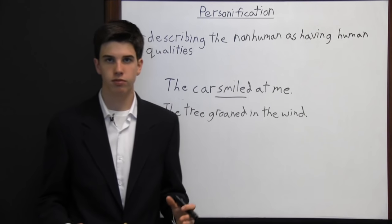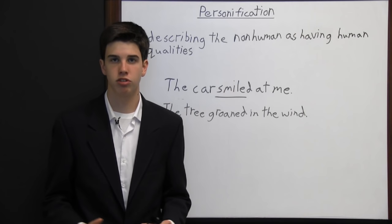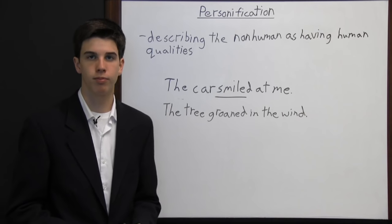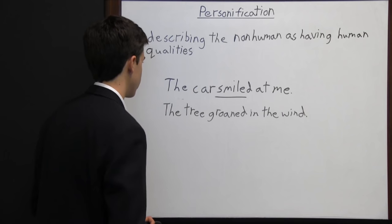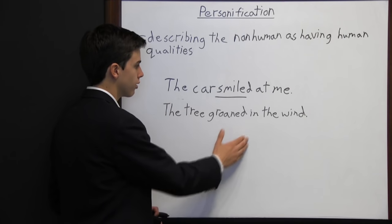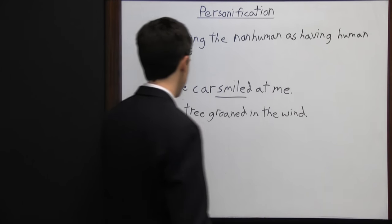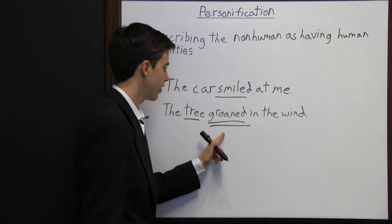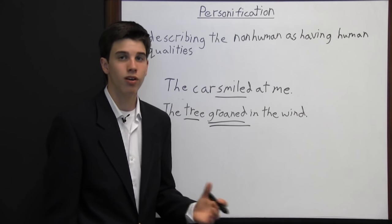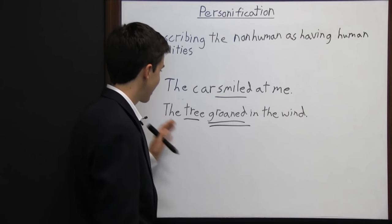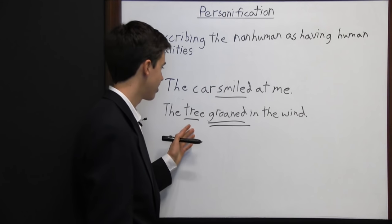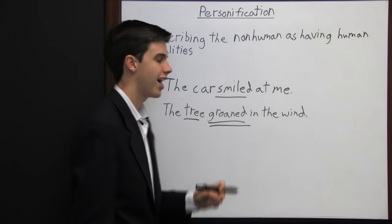Sometimes personification can include giving human qualities to animals, like in George Orwell's Animal Farm where animals reenact an entire war. Generally personification pertains to inanimate objects, but it can be animals as well. "The tree groaned in the wind" — the tree is non-human yet the author gives it the human quality of groaning. Although the tree made a groaning sound, the tree did not actually groan. This is personification because trees don't have mouths.